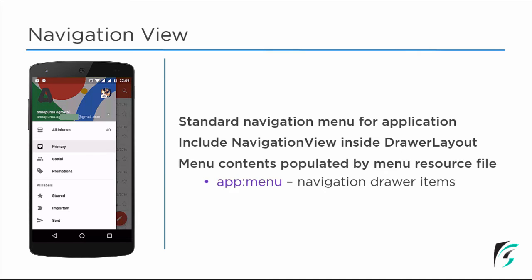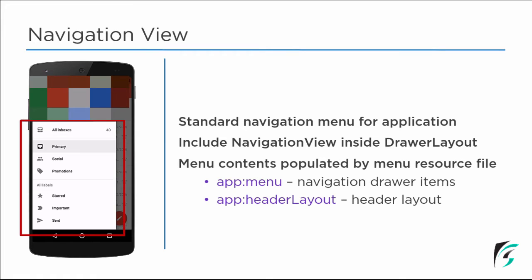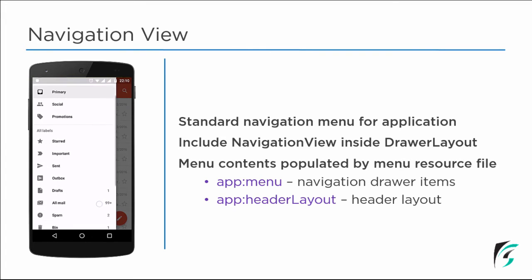The Navigation View consists of two parts: one is the menu and the second is the Header Layout. On the left side of the screen, you can see the Gmail application which has the Navigation View. This is the Header Layout, which has an image — in the Gmail application, it has the name of the user and the Gmail ID. And below that, we can see the menu provided in the Navigation View. These are the Navigation Drawer items.